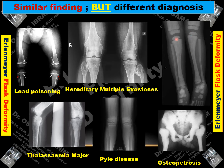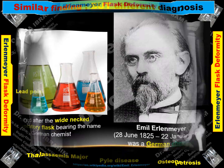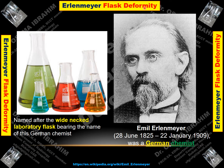Similar finding but different diagnosis. As we see, all these radiographs show the same finding of flask deformity — flask shape tibia and femur — however with different diagnoses. This film is for lead poisoning, that one for hereditary multiple exostoses, this one for osteopetrosis with diffuse osteosclerosis, that one for Pyle disease, and this one for thalassemia major, showing broadening of the metaphysis and narrowing of the diaphysis.